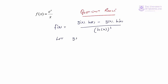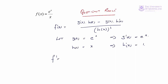We'll let g(x) = e^x (the numerator), which implies g'(x) = e^x. And h(x) = x, so h'(x) = 1. Substituting those values into our formula, we'll have g'(x)·h(x) = e^x · x, minus g(x)·h'(x) = e^x · 1, all over h(x)² = x².